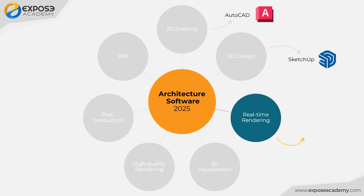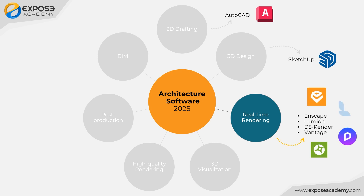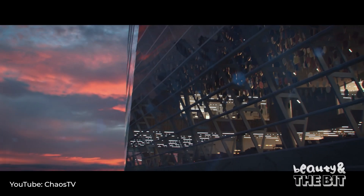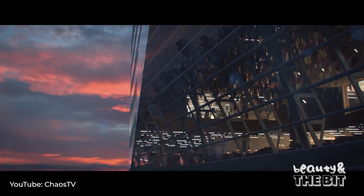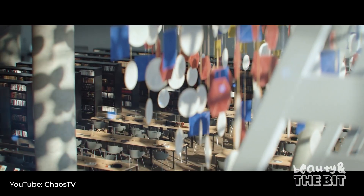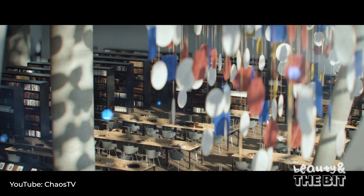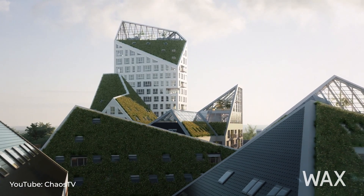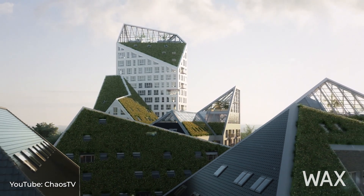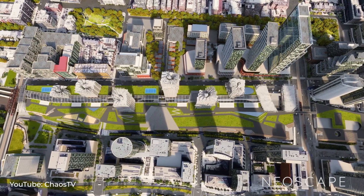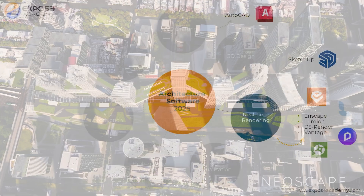Some popular examples include Enscape, Lumion, D5 Render, and Vantage. Once the design project progresses to the marketing stage, it generally requires more photorealistic and higher quality rendering results. This is where the limitations of 3D design and real-time rendering software become apparent.